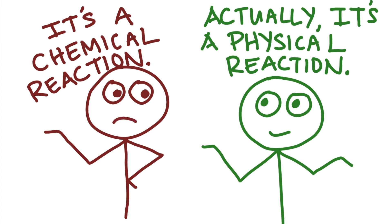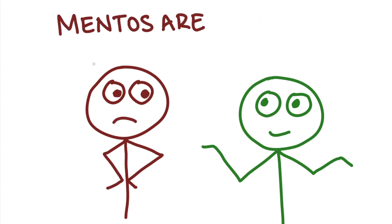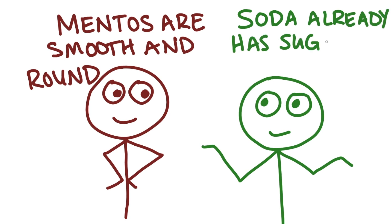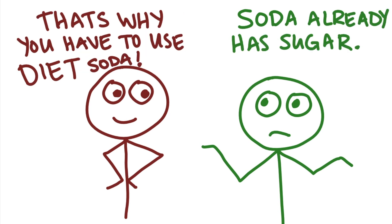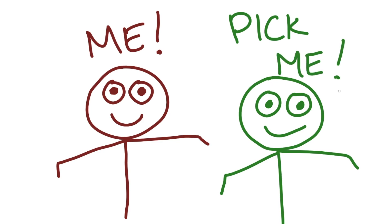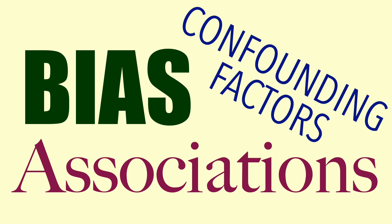What do you mean, rough texture? Mentos are smooth and round. It can't be sugar — soda already has sugar in it. That's why you have to use diet soda. How are you going to decide who is right? You could choose based on which person you like better, or which website is more entertaining and appealing. But these are not good methods for getting to the facts.